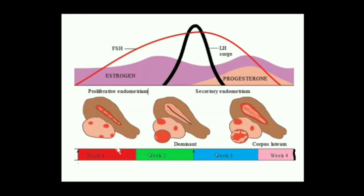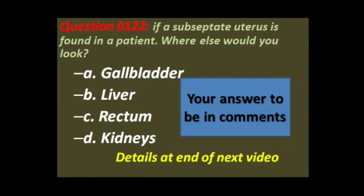After ovulation has occurred, the area between the echogenic halo and the central line fills in with echoes when the patient is in the secretory phase.